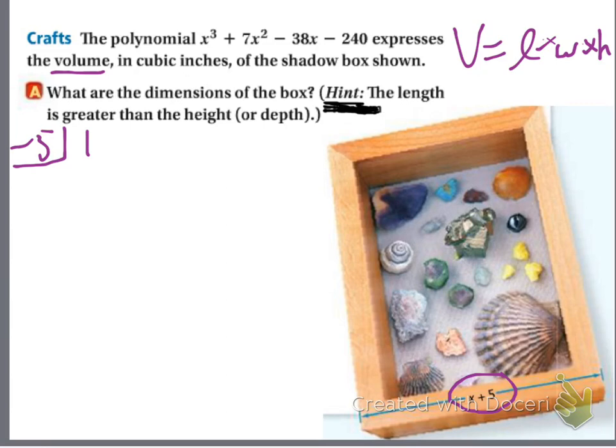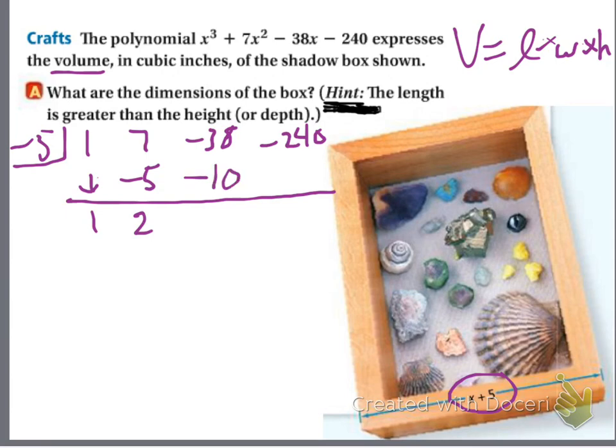Now do your coefficients: 1, 7, negative 38, negative 240. Skip a line. Drop the 1. Now by the way, we didn't skip any variables, right? We went x to the third, x squared, x, constant, so there's no zeros up there. All right, 1 times negative 5 is negative 5. Add, you get 2. Negative 5 times 2, negative 10. Add them, negative 48. Negative 5 times negative 48, positive 240. Add them, you get 0.